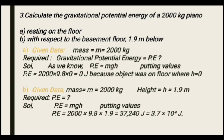We need to find the potential energy of the piano. Given: mass is 2000 kg. The formula for potential energy is PE equals mgh. Putting in the values: mass is 2000 kg, g is the gravitational acceleration, and height h is 1.9 meters. Calculating gives the result for PE.